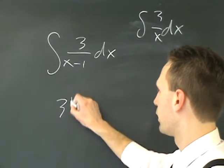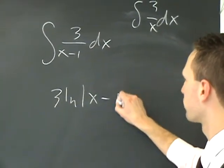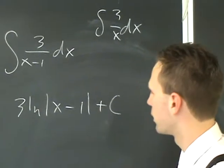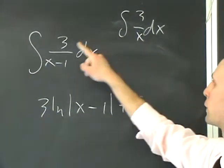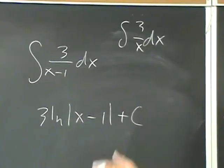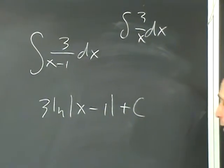So this is just going to be the same thing. It's just going to be 3 ln of absolute, not x, but x minus 1. Because it's just a slight change from this to get here. The change is simple enough. You can just carry out the integration. You really don't have to worry about it.